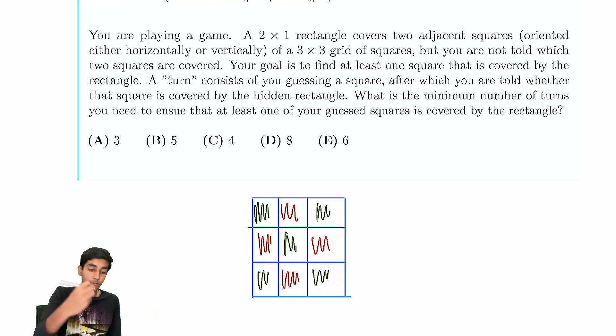The thing is, there are four red squares and five green squares. The answer must be four, because that's the least.